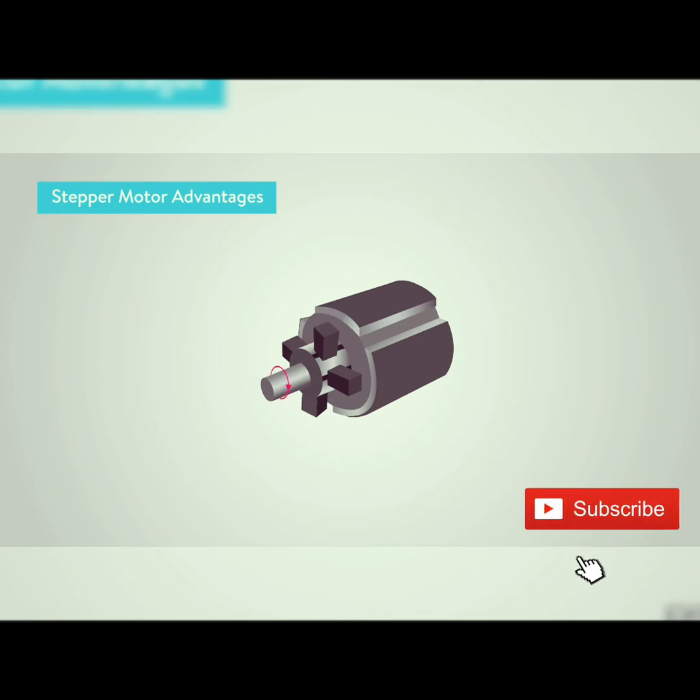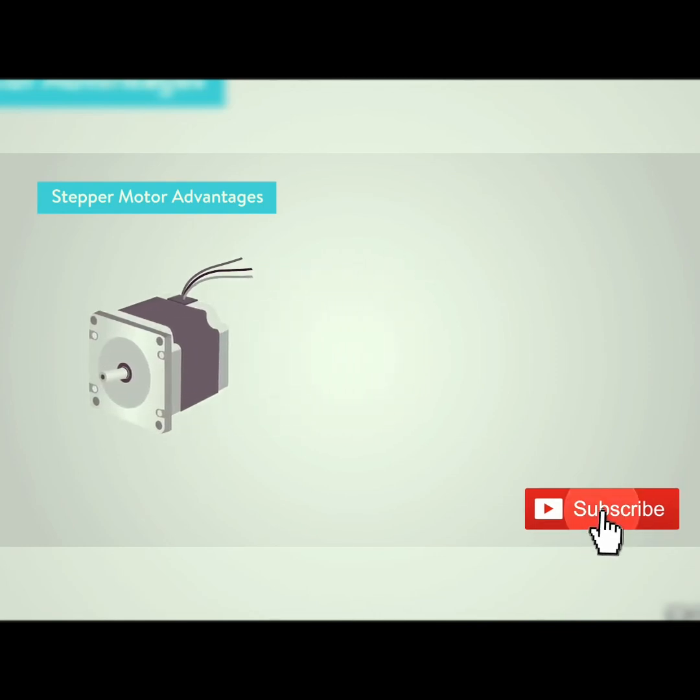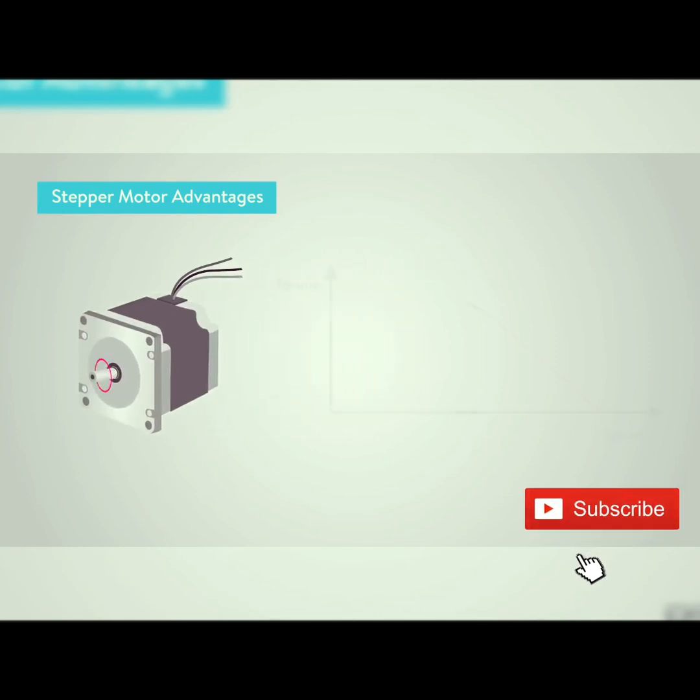Normal DC motors do not have very much torque at lower speeds. However, a stepper motor has maximum torque at low speeds. So this makes steppers a good choice for applications requiring low speed with high precision.